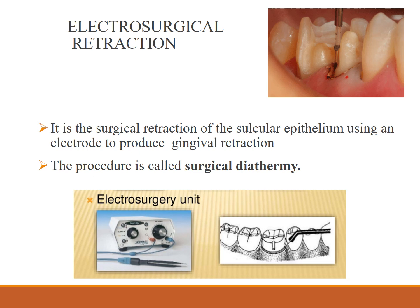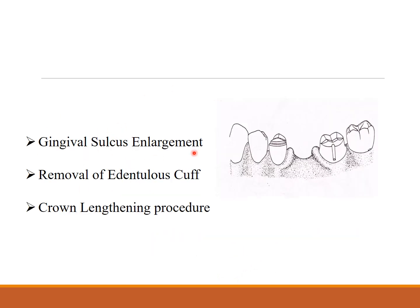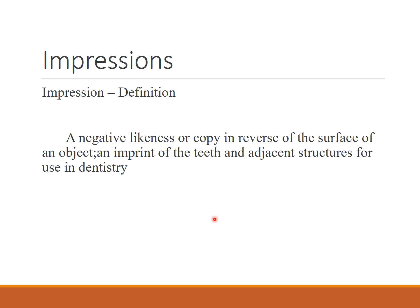Indications for electrosurgery include areas of gingival tissue inflammation where retraction cord cannot be used, and gingival tissue proliferation around the prepared finish line. Contraindications include patients with a pacemaker and use of topical anesthesia such as ethyl chloride and other inflammatory aerosols. It can also be used for gingival sulcus enlargement, removal of edentulous cuff, or crown-lengthening procedures.